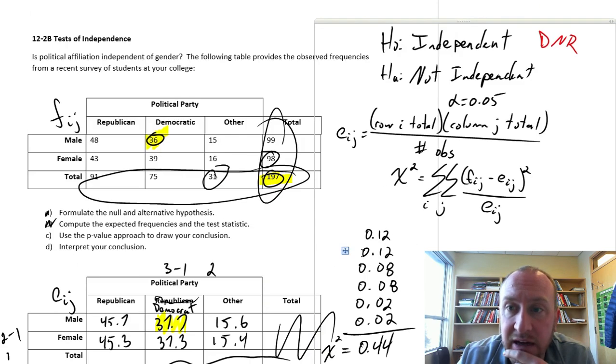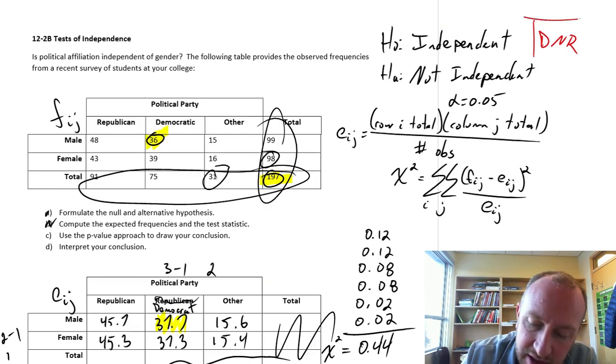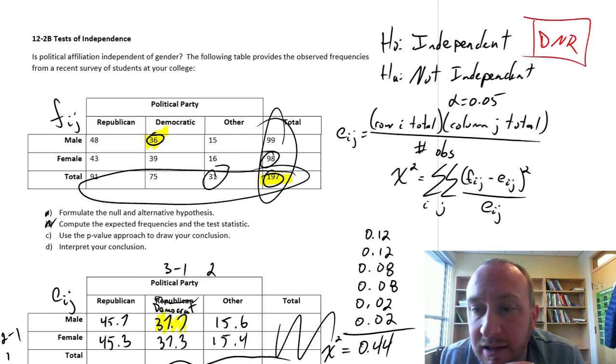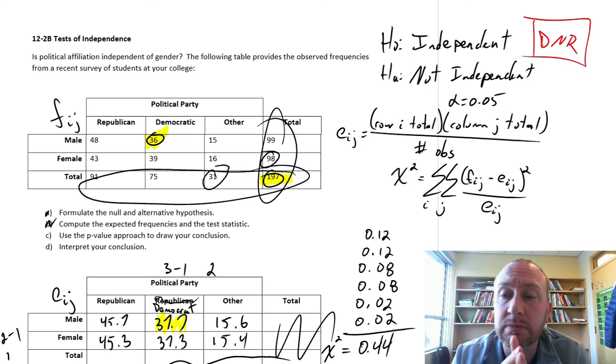That confirms our conclusion. We do not have enough evidence to reject that null hypothesis. So it appears as though political party choice, preference, and gender appear to be independent variables.